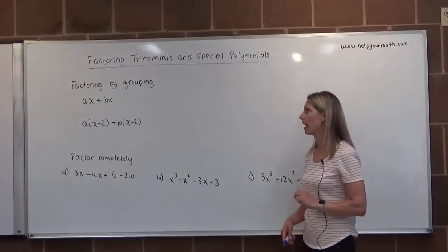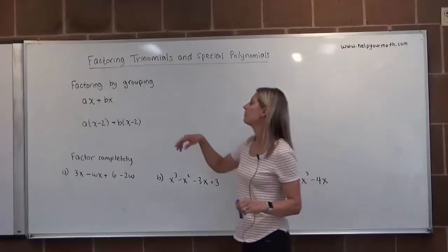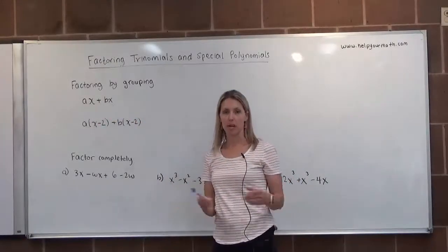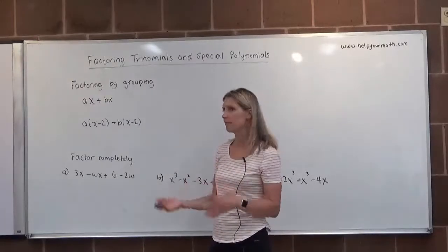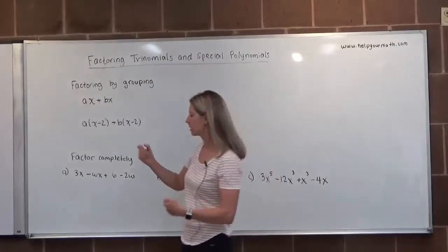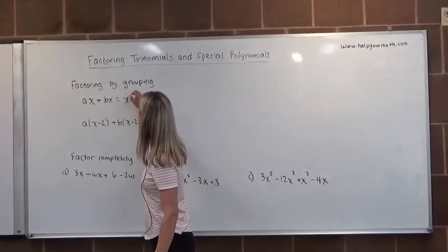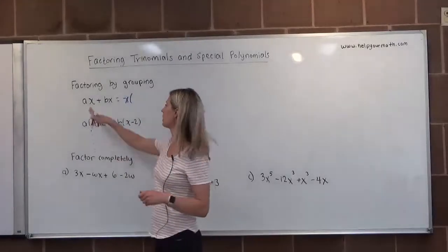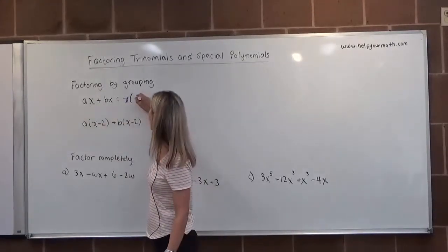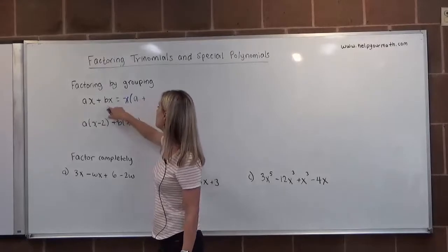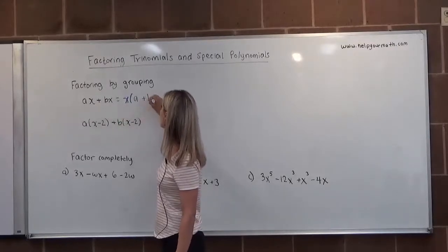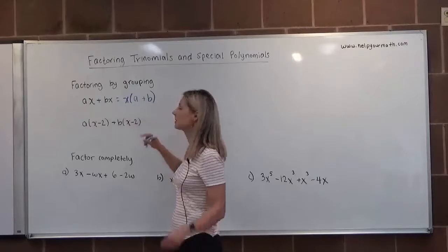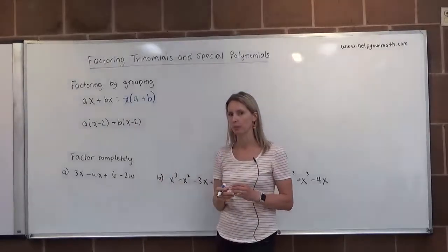A very quick review: if we have two terms — ax and bx — we factor out the greatest common factor. In this case, they both have a factor of x, so we pull out x and multiply it by whatever's left from each term. When I divide x into ax, I'm left with a; when I divide x into bx, I'm left with b. So we end up with x times the pieces left over from each term.